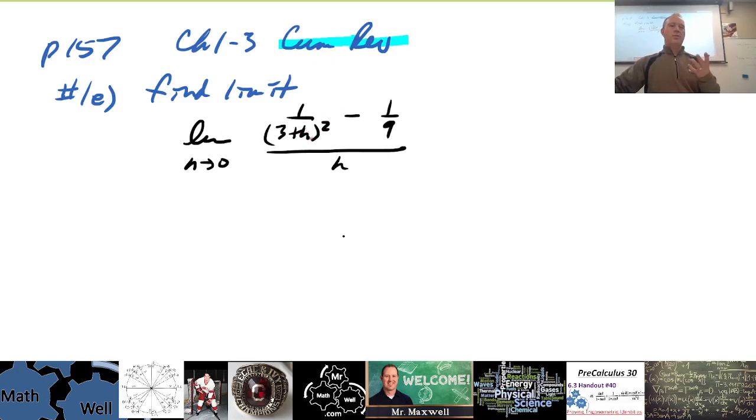It's the definition of a derivative. So we're actually finding a derivative here, it's not just any regular old limit, we're finding the slope of a tangent line at a point. And if you notice, we have 1 over something squared, so the function looks like 1 over x squared, and the point of tangency looks to be 3, at x equals 3.